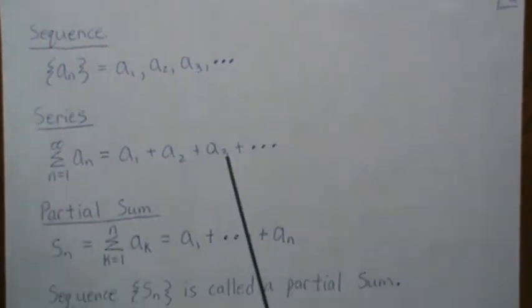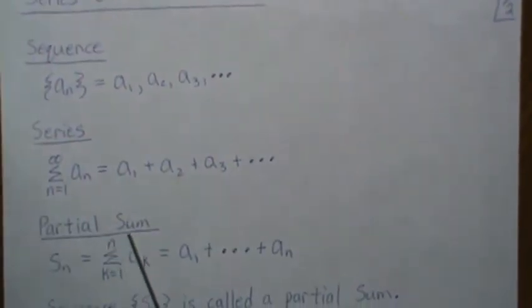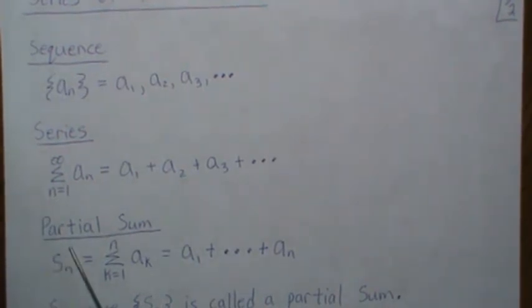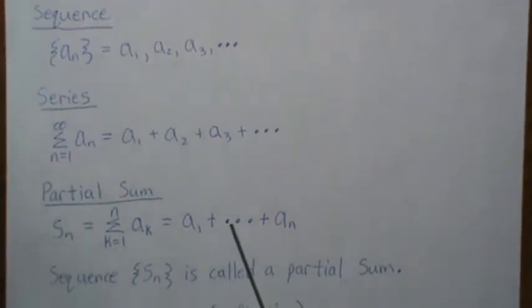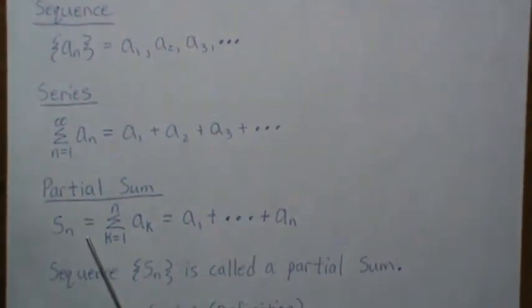But if we stop at some point, that's called the partial sum. And it's usually generically written as S of N. And N tells you how many terms. So it's from 1 to N of the sum from 1 to N of AK, which is this. And now remember for each N, then this is a number.